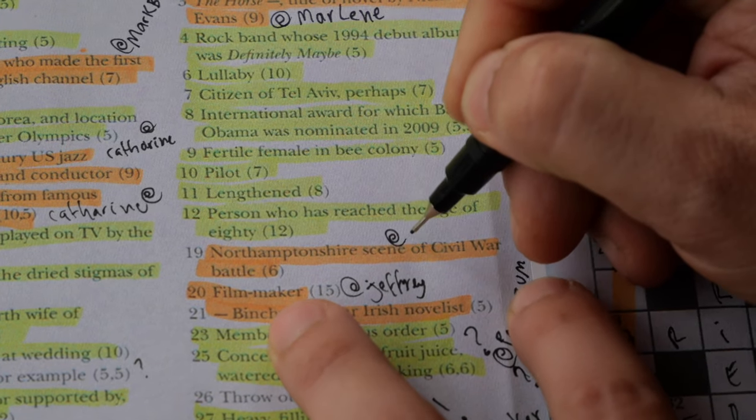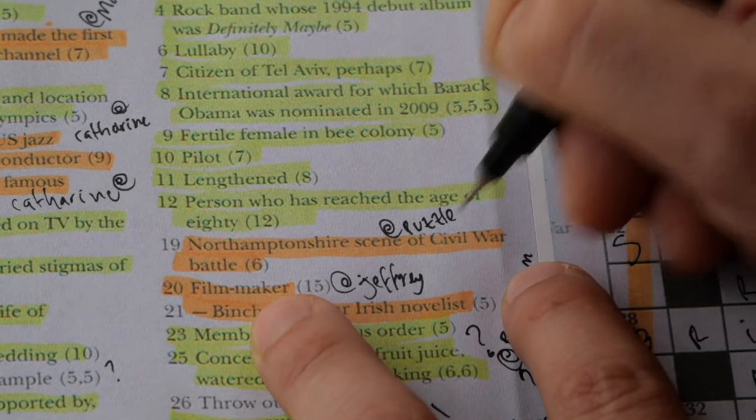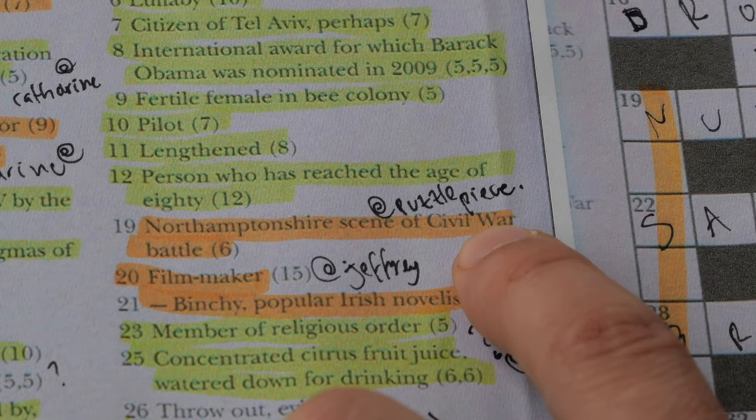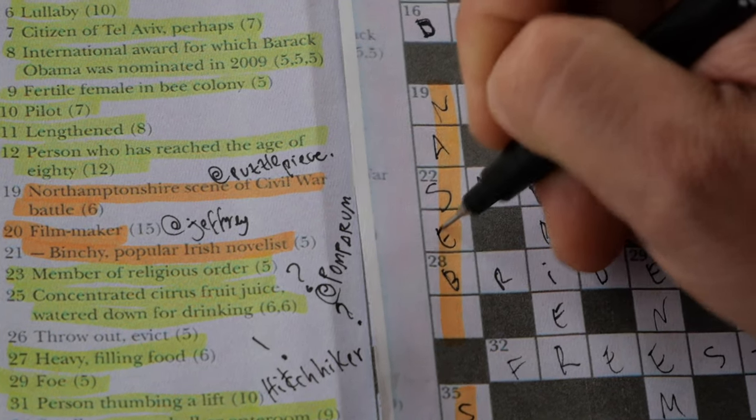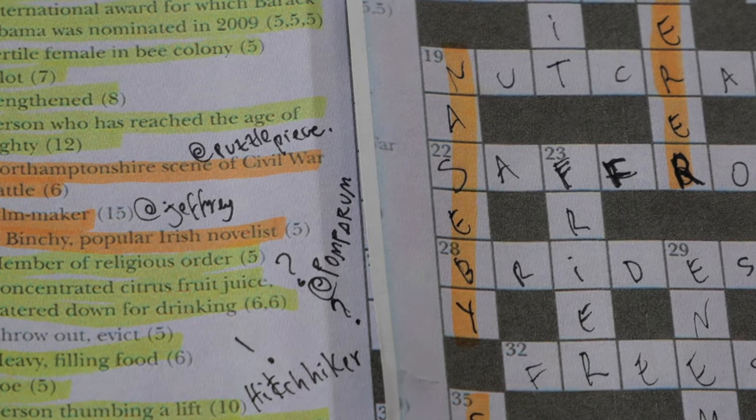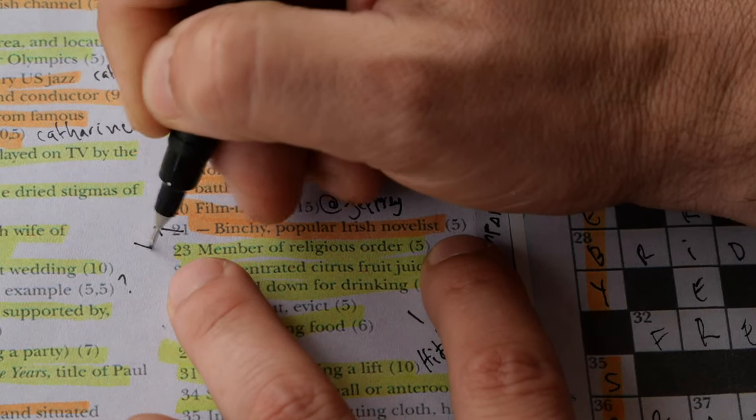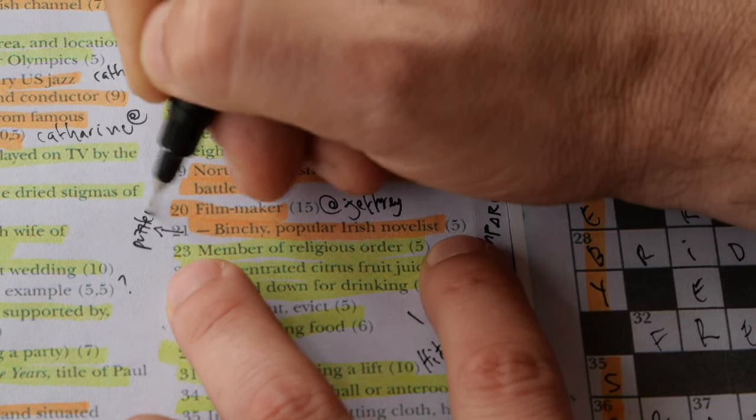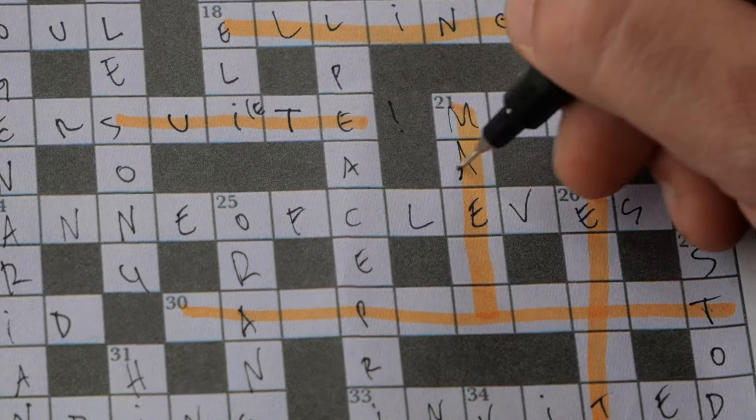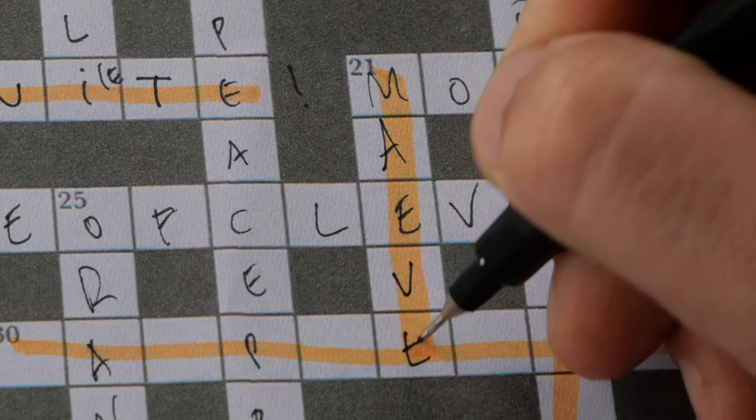And also suggested by Puzzle Peace, number 19 down would be Naseby. Bingo! Now number 21 down, Maeve Binchy was suggested by Puzzle Peace as well. And we will briefly talk about Maeve later in the video as well.